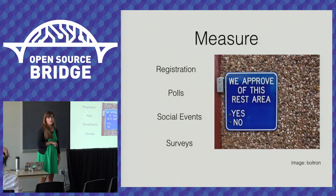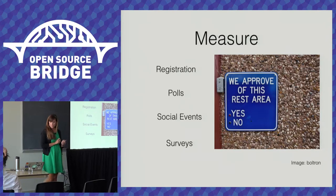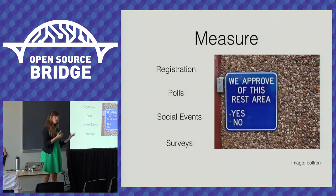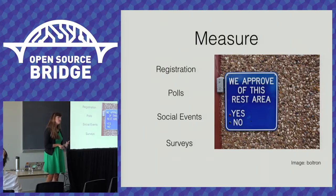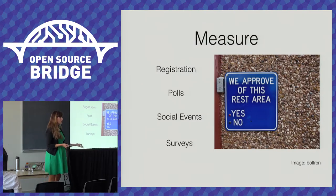At Puppet we operate under the lean startup motto: build, measure, learn. We incorporate that into our event strategy and are constantly iterating. We try to touch people across the entire feedback loop. Pre-event, during registration, you want to get all your logistical info — t-shirt size, dietary restrictions — but also find out a little about your audience so you can gauge them and help your speakers if they're building content.